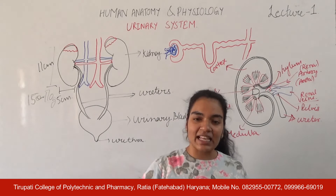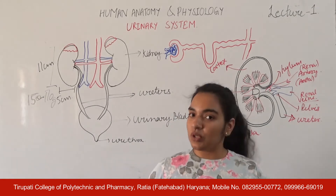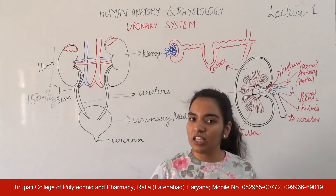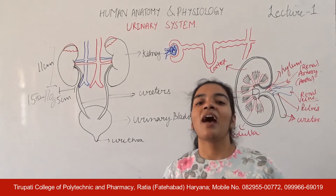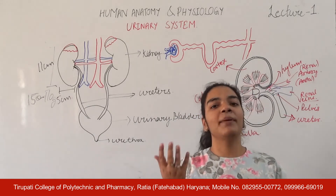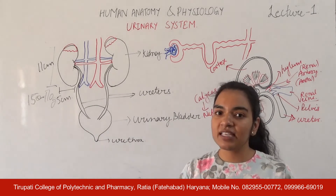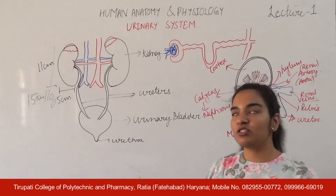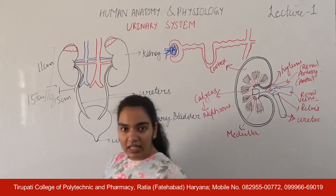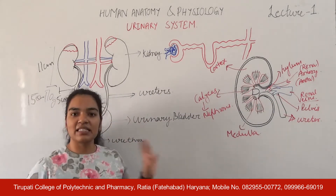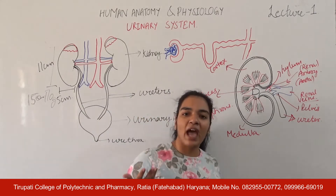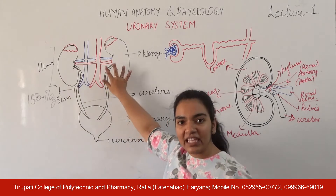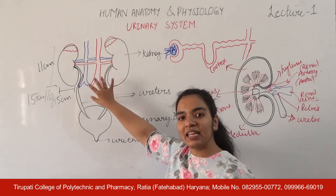In this lecture, we will study about the urinary system in detail. First of all, our urinary system is comprised of two kidneys. We have two bean-shaped, reddish-brown coloured kidneys.